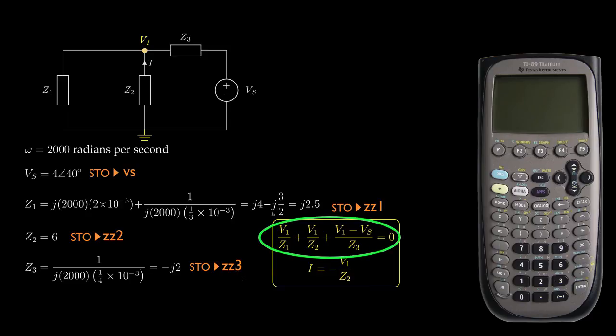Now, after storing each of these quantities, I'll then use a utility called CSolve or complex solve to solve this equation for V1. I'll enter the equation just as I've written it here on this screen. And after doing that, I'll use that result to solve for the desired current I as negative V1 divided by Z2.